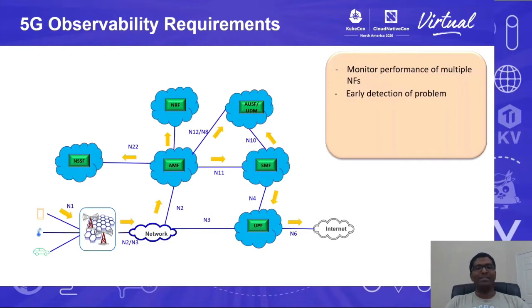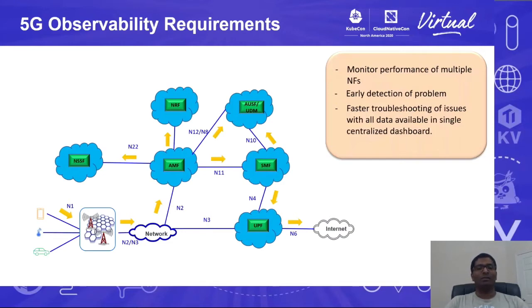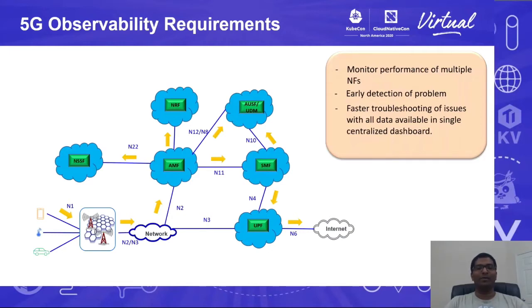The other requirement is that once the problem is detected, we should be able to troubleshoot and resolve the issue at the earliest so that there is minimum impact to customers. For that, all the relevant debug information — whether it's stats, whether it's logs, whether it's traces — everything should be readily available in a centralized location, like a dashboard, so that it's available for developers or support people to debug the issue.